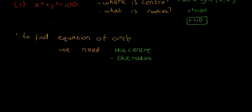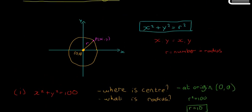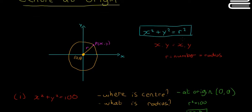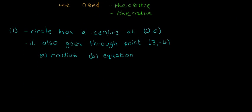So we'll look at this example here. In this example, we have a circle that has a center at (0,0) and it also goes through the point (3,-4). They want us to find the radius and the equation of the circle. Since the center is at the origin, it's going to take the form of x squared plus y squared is equal to r squared. We're going to draw a little sketch out. This is going to help us solve this one.